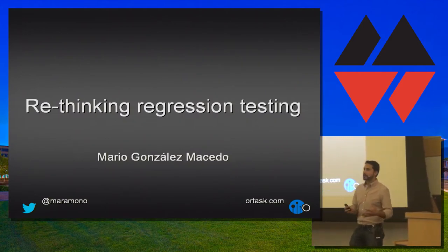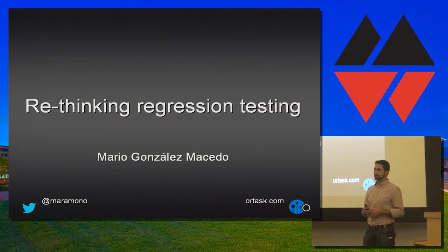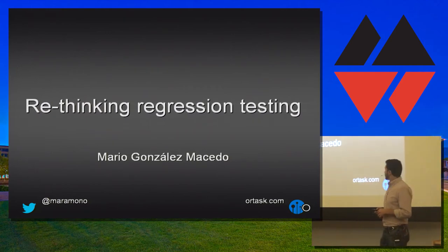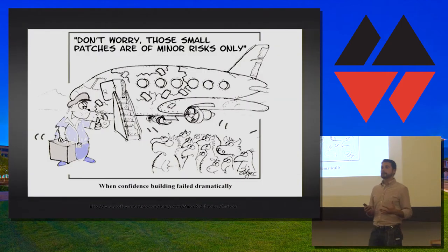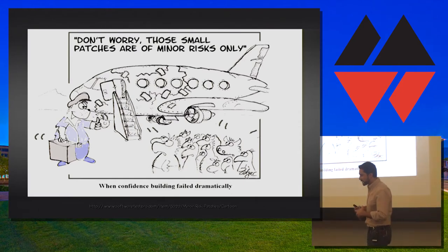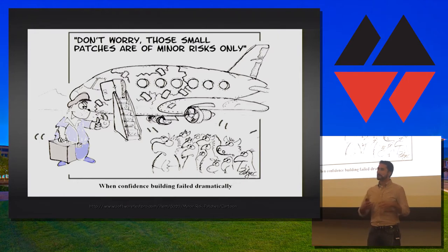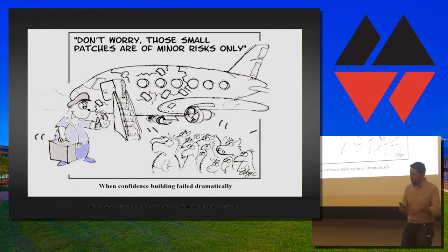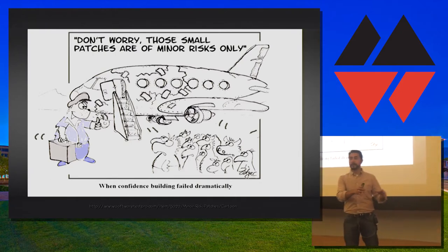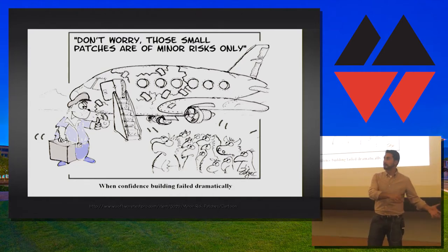But why do we need to talk about regression testing anymore? It's widely understood, it's a widely used practice. Well, the reason is because of confidence, or rather the lack of confidence in our tests. Because even though we trust our tests 100%, we don't really know where their weak spots are, or whether they have blind spots. We don't know if we have over-tested an area of our product and left others under-tested or whether we have left them untested completely.